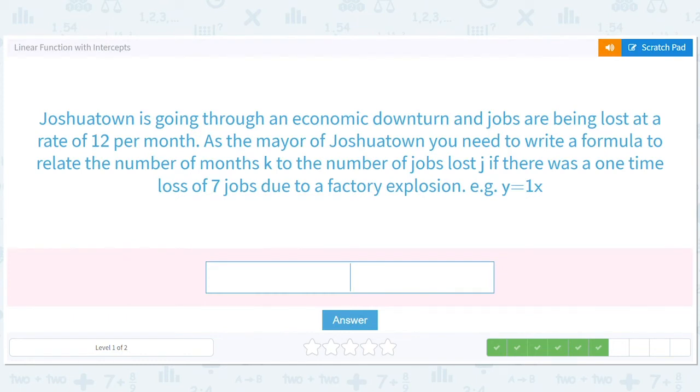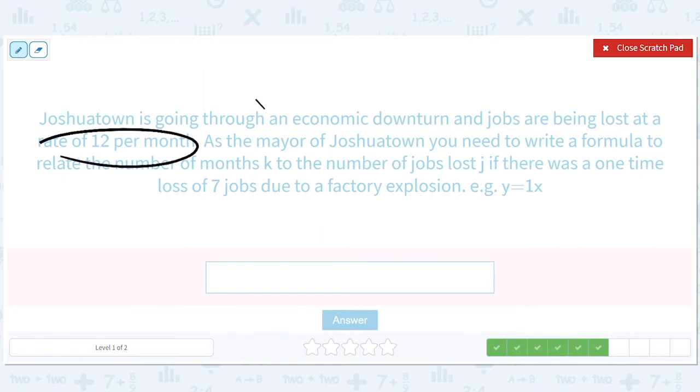At a rate of 12 per month. Lost at a rate of 12 per month. Joshua town is going through an economic downturn and jobs are being lost at a rate of 12 per month. So Y equals negative 12X. As the mayor of Joshua town, you need to write a formula to relate the number of months K to the number of jobs J. If there was a one time loss of seven jobs due to a battery explosion. So one time loss, that's not a rate, that's a starting off loss. So negative 12X minus seven. That's the number of months and that's jobs.